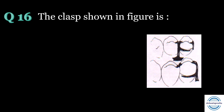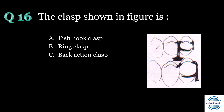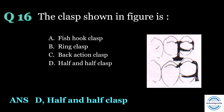Question number sixteen: the clasp shown in the figure is — A. Fish hook clasp, B. Ring clasp, C. Back action clasp, D. Half and half clasp. The answer is D, half and half clasp. This is an important image from McRacken. It is a type of circumferential clasp in which the retention arm arises from one direction and the reciprocal arm arises from another minor connector, which is why it is called the half and half clasp.